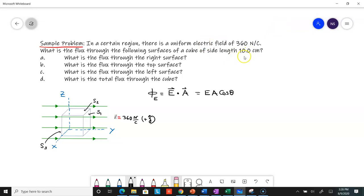The length of the cube is given as 10 centimeters, so I'll call it L. L is 10 centimeters or 0.1 meters. In these problems with clean surfaces in a uniform electric field, you can use the formula E dot A.